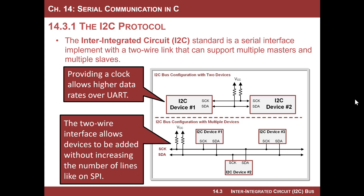Another advantage is that I²C is designed so that you only ever use two wires, and it can support many devices hung onto the bus, including multiple masters and multiple slaves. You can keep adding devices without increasing the number of lines. With SPI, every time you add a slave you have to add a new select line, so the number of lines grows. Even with daisy-chaining, every new device requires rewiring. I²C improves upon UART speed while not adding lines as you scale.